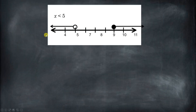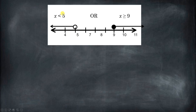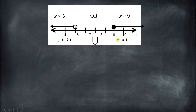Here we see a compound inequality. On the left, this says x is less than 5 — it's less than because it's an open circle. On the right, we have x is greater than or equal to 9. This is a compound OR inequality. We can write each piece in interval notation: on the left, negative infinity with a parenthesis to 5 not included; on the right, 9 included to infinity. The OR in interval notation is represented by the union symbol, which says it's all of these or all of these, with a gap in the middle.